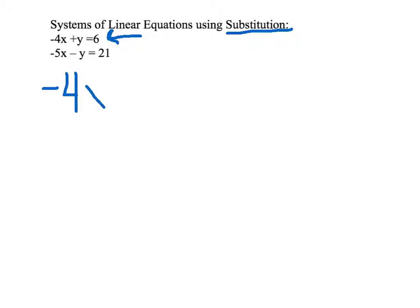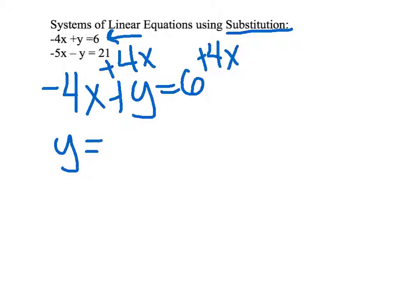So we have negative 4x plus y equals 6. Let's solve for y. To do this let's add 4x to both sides. Y will then equal 6 plus 4x.